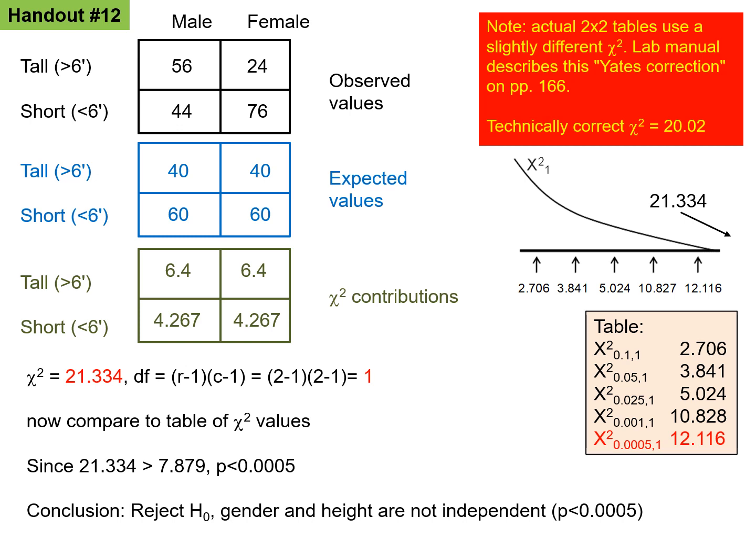And remember, the null hypothesis is that gender and height were independent of one another. Therefore, rejecting the null hypothesis gives us the conclusion that gender and height are not independent of one another. There's the p-value. And of course, we could look at the values here and see that it's basically because males are taller than females.